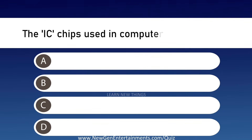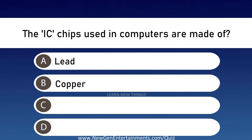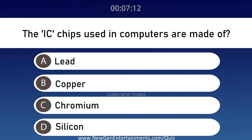The IC chips used in computers are made of — Options are A: Lead, B: Copper, C: Chromium, and D: Silicon. Answer is Option D, Silicon.